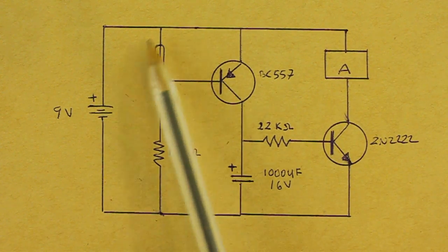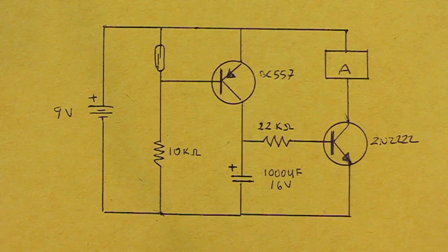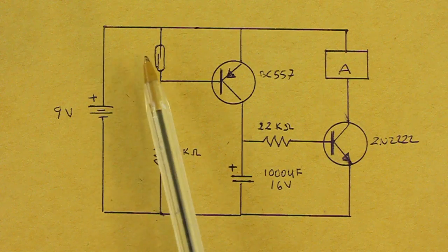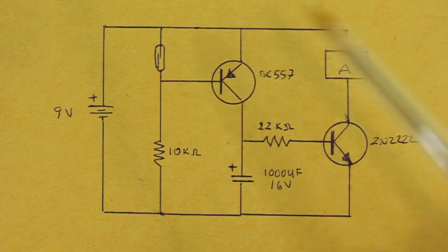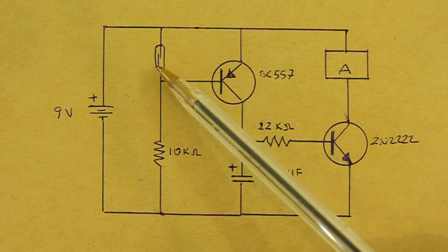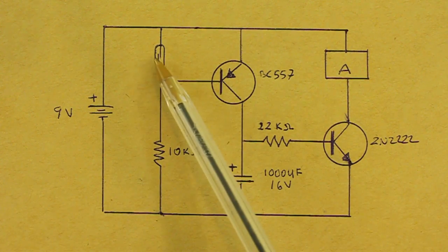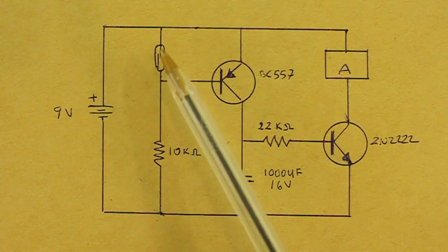And here I have a reed switch or magnetic switch which works in the following way. When I have a magnet close to the switch, it is closed so the current can flow through the switch. When the magnet moves away from the switch, the switch opens.